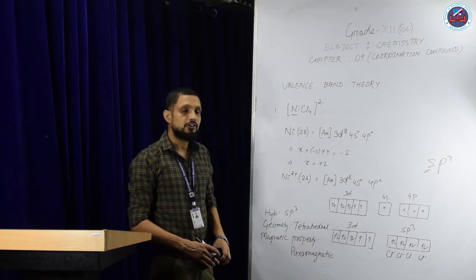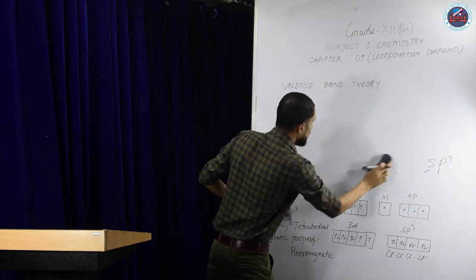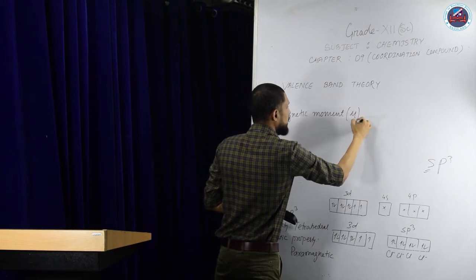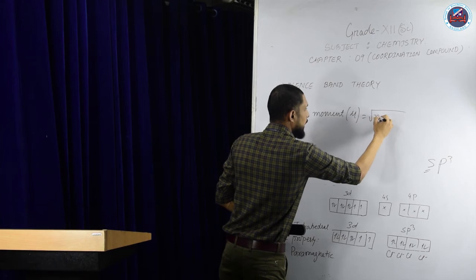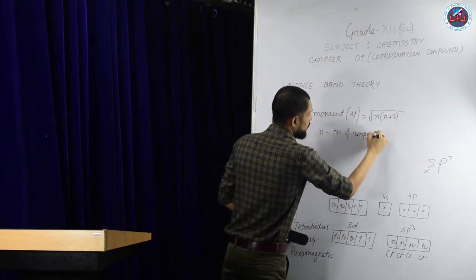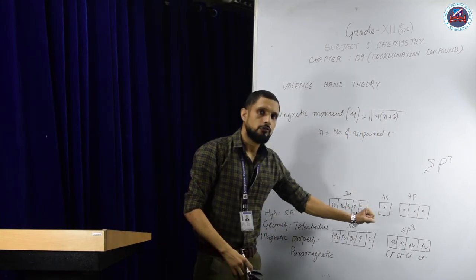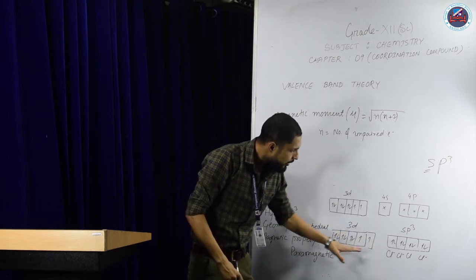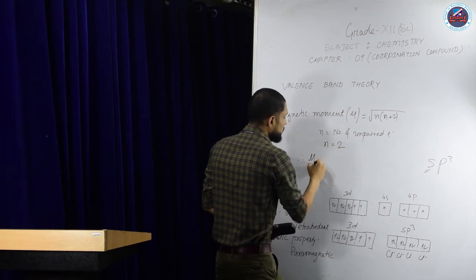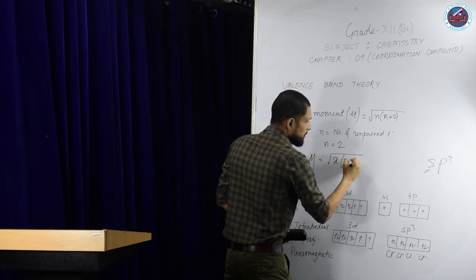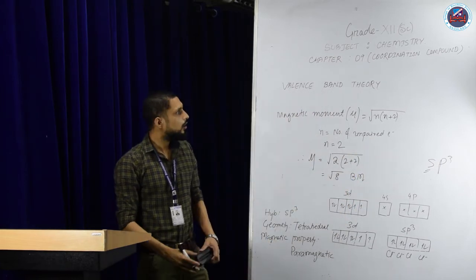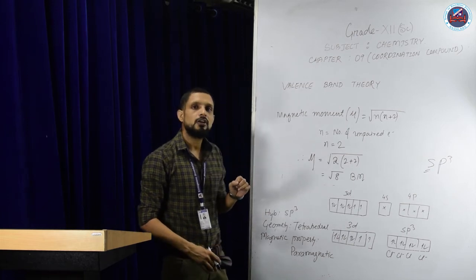Next, find the magnetic moment. The formula is μ = √(n(n+2)) BM, where n is the number of unpaired electrons. Checking the orbitals, there are two unpaired electrons, so n = 2. The magnetic moment μ = √(2 × (2+2)) = √8 BM. This is how we apply valence bond theory to a given compound.